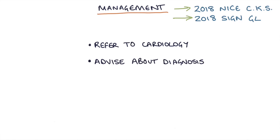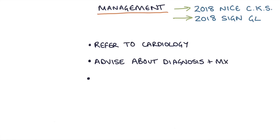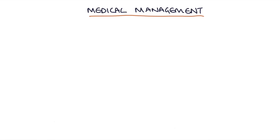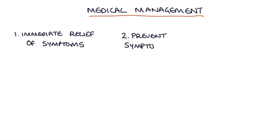Advise them about the diagnosis, the management, and when to call an ambulance. Treat them medically — which we'll talk about in a second — and there are also options for procedures and surgical interventions to treat the underlying stenosis of the coronary arteries. There are three aims for medical management: immediate relief of symptoms, prevention of symptoms, and secondary prevention for cardiovascular disease.